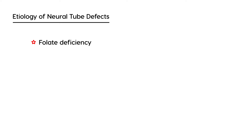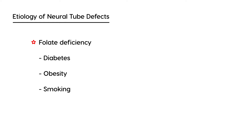There are other reasons a woman can have a baby with a neural tube defect. Another common cause is diabetes in the mother, obesity in the mother, and cigarette smoking as well.